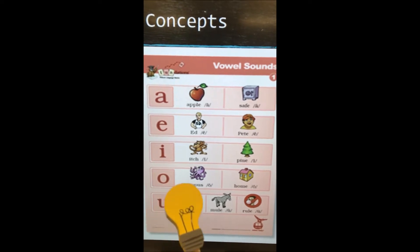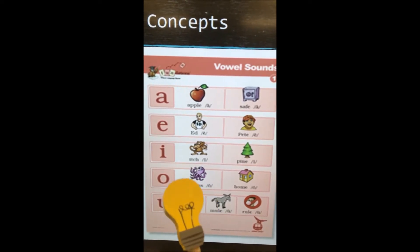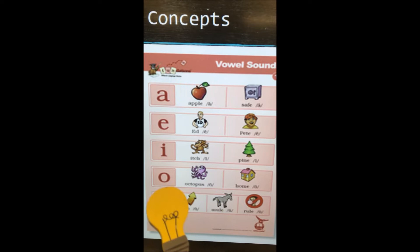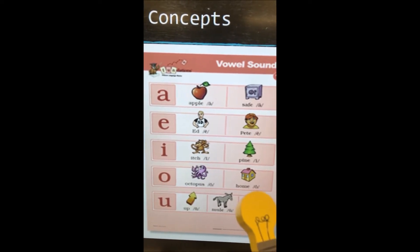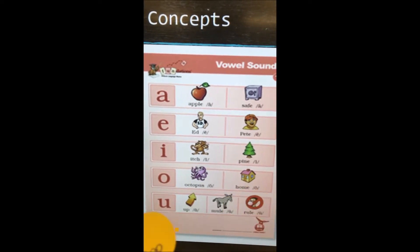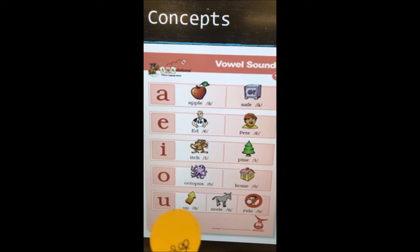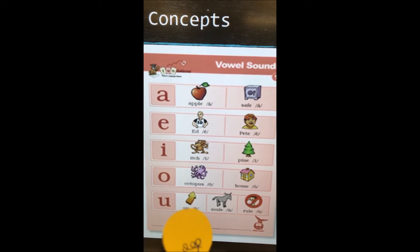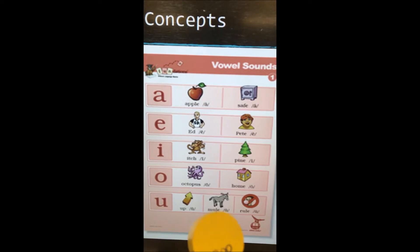O: short sound — octopus, aw, o. Long sound: home — o. U: short sound — up, uh. Long sound: U, mule — u.